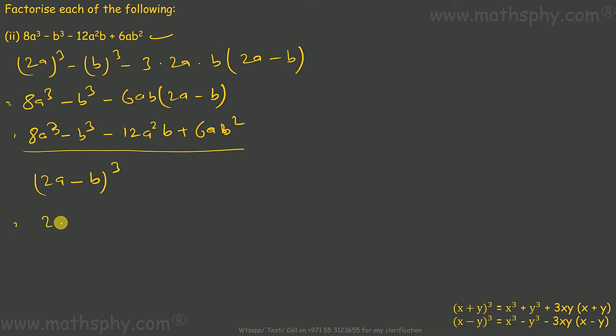This will be 2a minus b, written three times: 2a minus b, 2a minus b, 2a minus b.